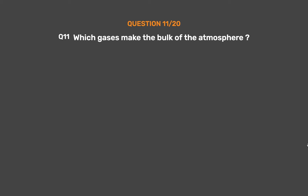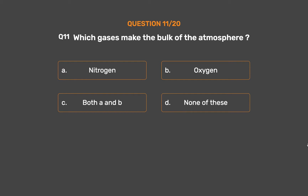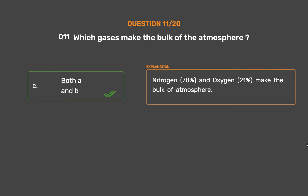Question number 11: Which gases make the bulk of the atmosphere? Option A: Nitrogen. Option B: Oxygen. Option C: Both A and B. Option D: None of these. The correct answer is Option C, Both A and B. Nitrogen, 78%, and Oxygen, 21%, make the bulk of the atmosphere.